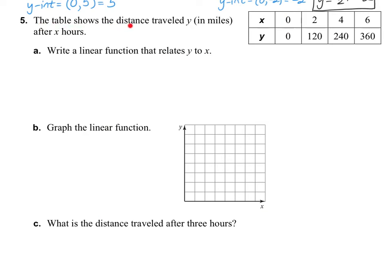Let's take a look at number 5. The table shows the distance traveled Y in miles after X hours. After 0 hours, they have traveled 0 miles. After 2 hours, 120 miles. After 4 hours, 240 miles. And after 6 hours, 360 miles. The first step is to write a linear function that relates Y to X — that means Y equals MX plus B, where M is your slope and B is your Y-intercept. Since we don't have a graph yet, we need to use our slope formula.